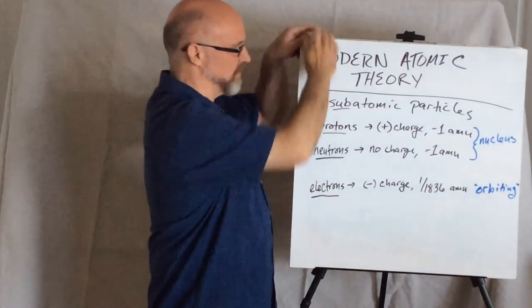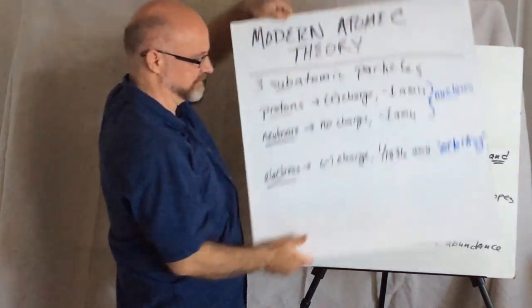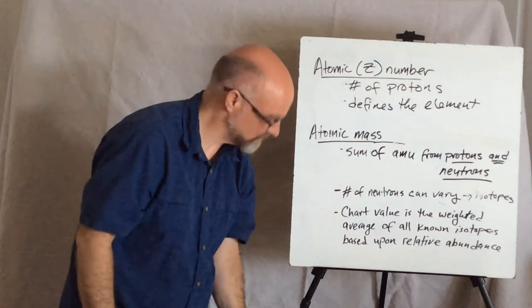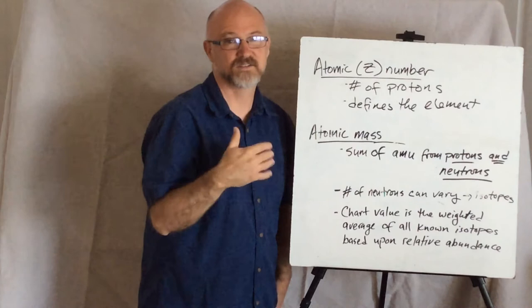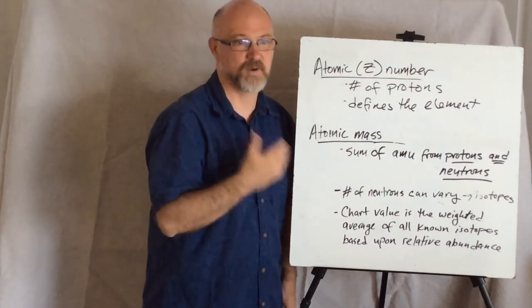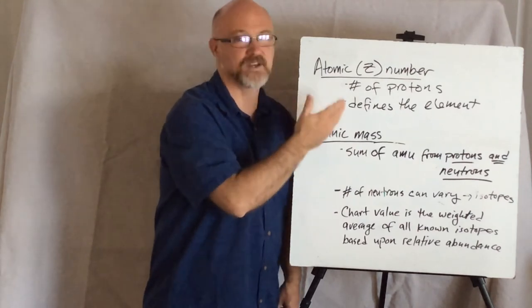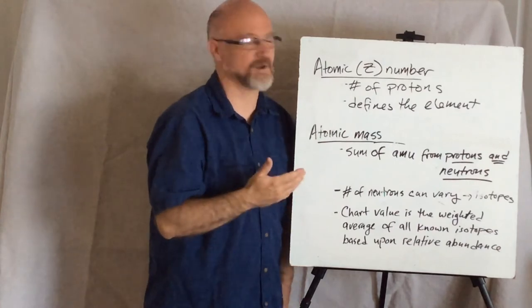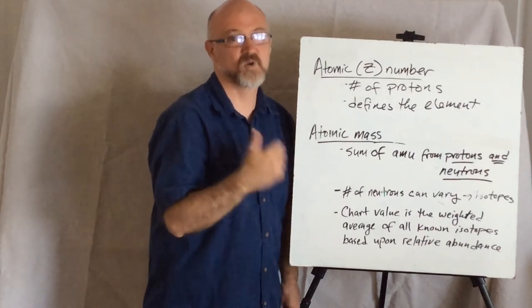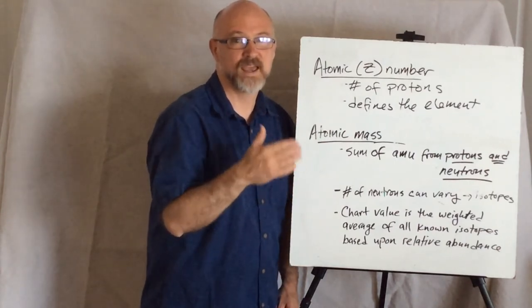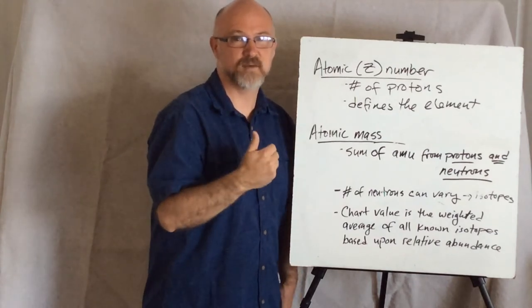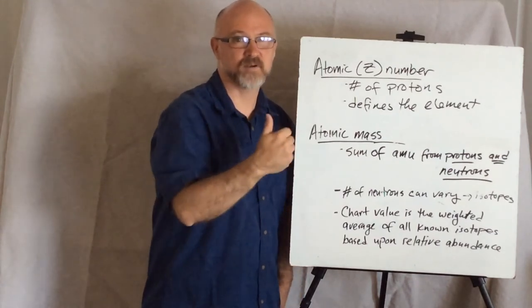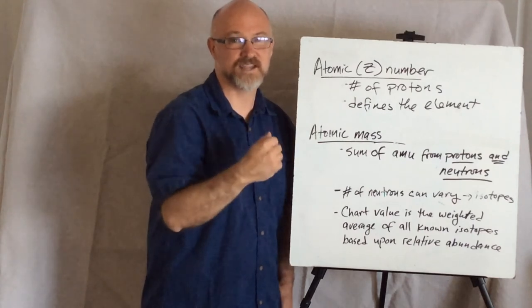But let's stay with some other basics. So, two defining aspects, information you find on a periodic chart about every element. You have the atomic number, otherwise shorthanded as the Z number. That's the number of protons that's in an atom. And that's what defines which element it is. Because every sample, every atom of any given element will have the same number of protons.